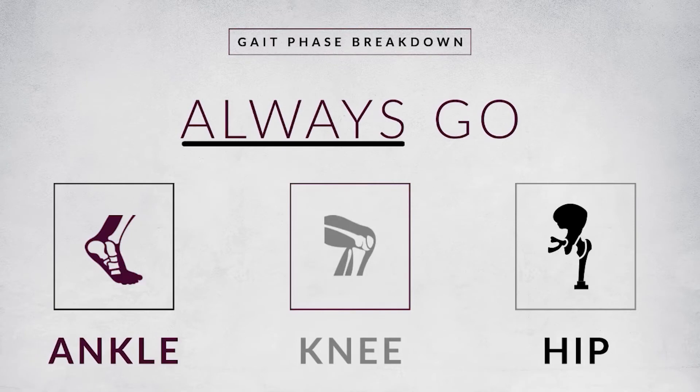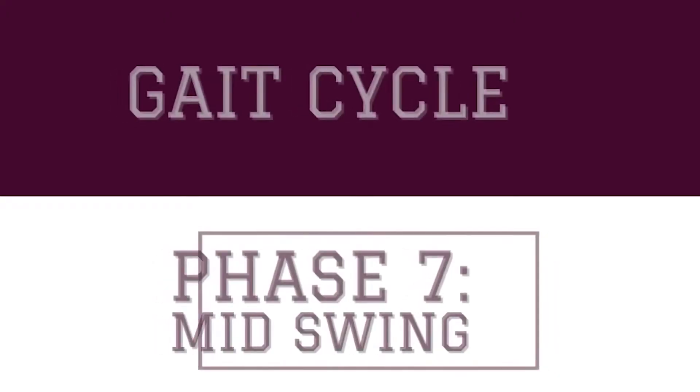For every phase of the gait cycle, you should consider three joints: ankle, knee, and hip. That doesn't mean there's a muscle contraction occurring at every joint, but it's a great way to make sure you don't forget one. Many students think about the ankle and foot, do everything right there, but forget either the knee or the hip. Always address ankle, knee, and hip as your baseline strategy.